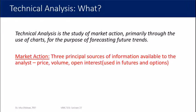Market action refers to the three principal sources of information available to the analyst or trader: price, volume, and open interest. Open interest is mostly used in futures and options trading, so we'll focus on price and volume. There are various kinds of prices — opening price, closing price, average price, 52-week high, 52-week low — so many kinds of prices are involved in market action.